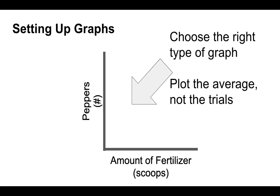It's also really important to understand that we want to choose the right type of graph. You might have a scatter plot, a line graph, or a bar graph. We want to make sure we're matching the information we have and the way we collected it with the appropriate type of graph — we'll go through that together. Also, when we do this, you want to make sure that you're plotting the averages, not the individual trials. The trials are all getting averaged together, so there's no need to plot each individual trial point — but we do want to plot the average when making our graphs.